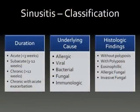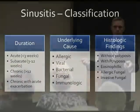How do we classify sinusitis? The most common way is by duration. Less than three weeks is acute sinusitis; greater than 12 weeks is chronic sinusitis; three to twelve weeks is subacute. Some people have infections that never really go away but get worse at times - we call that chronic with acute exacerbation.